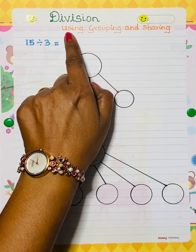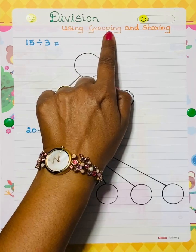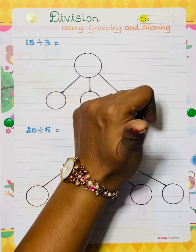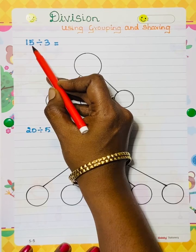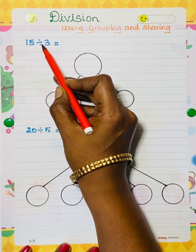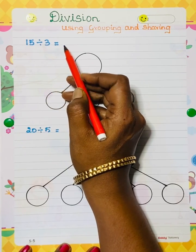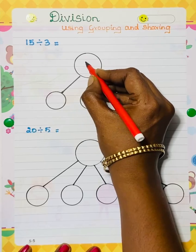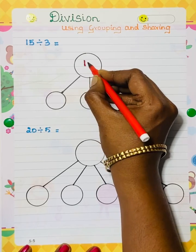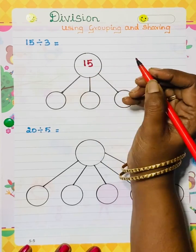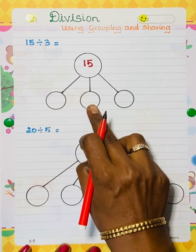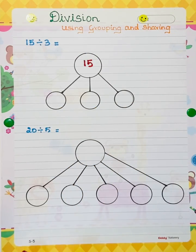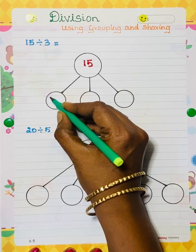Division using grouping and sharing. First one: 15 divided by 3. You have to write the number 15 here, divided by 3, so three circles are here. Now we have to count the number 15.